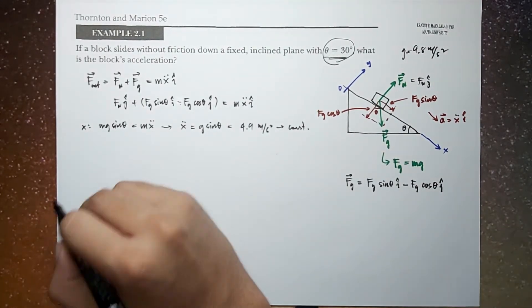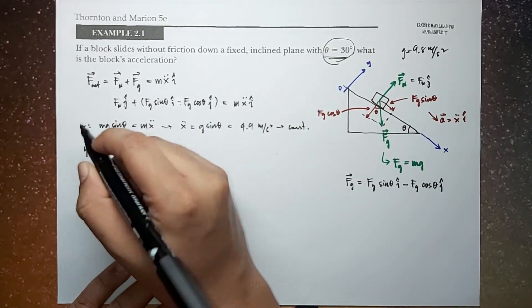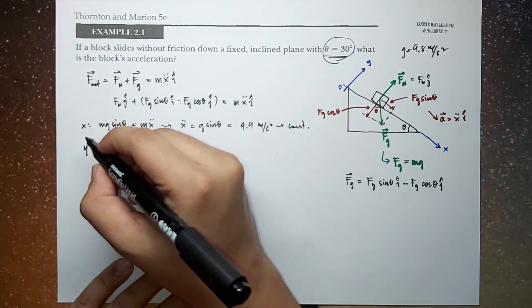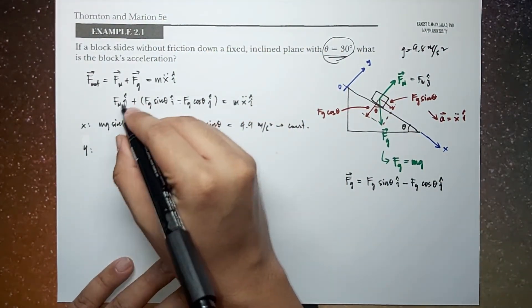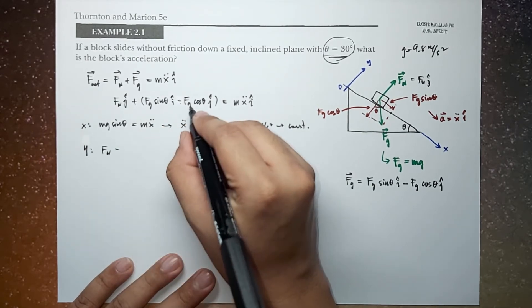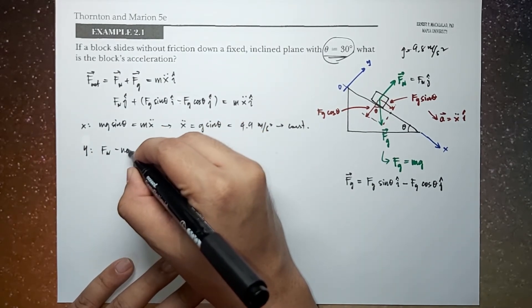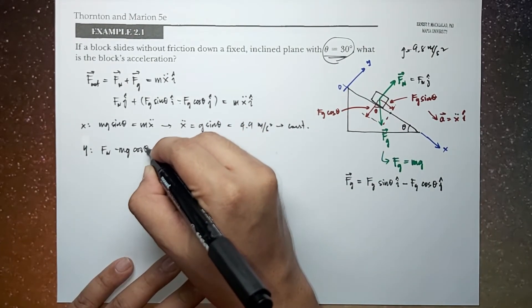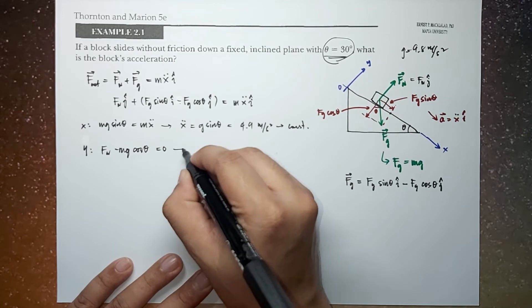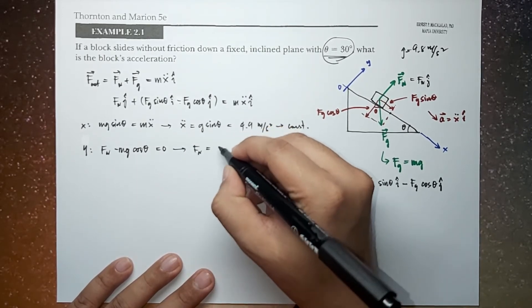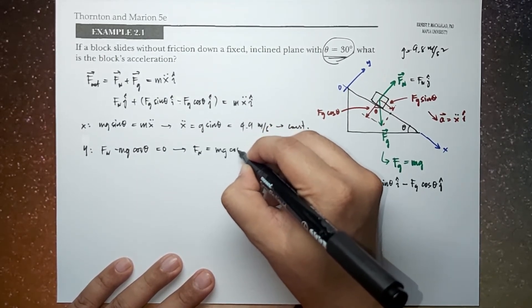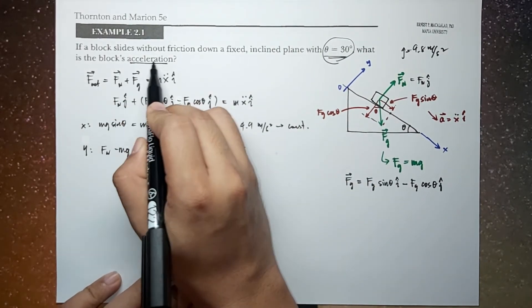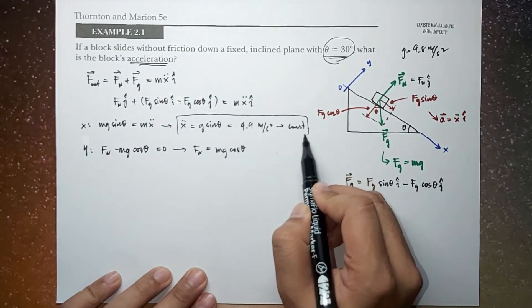Just to complete the components, y double dot, y components will be in terms of Fn minus Mg cos theta is equal to 0. So this tells us that the normal force is just equal to Mg cos theta. Now we're looking for the block's acceleration. So this is the answer.